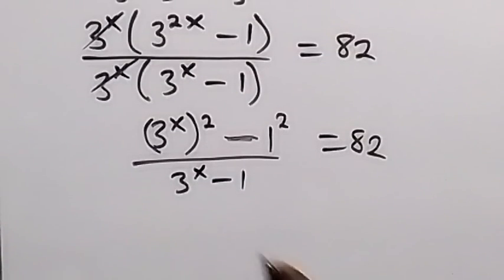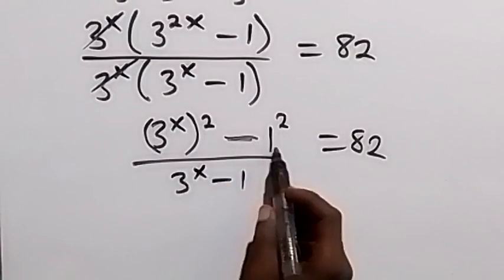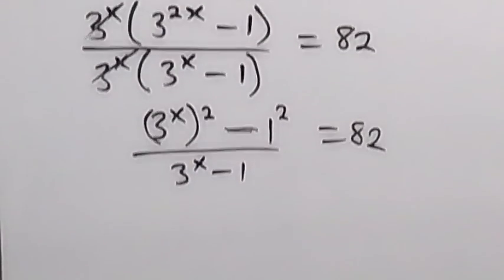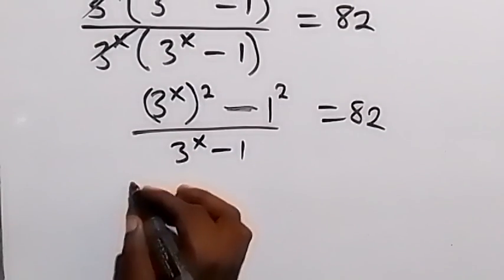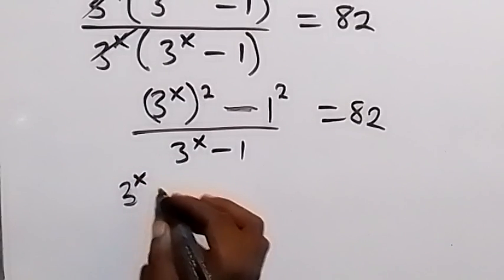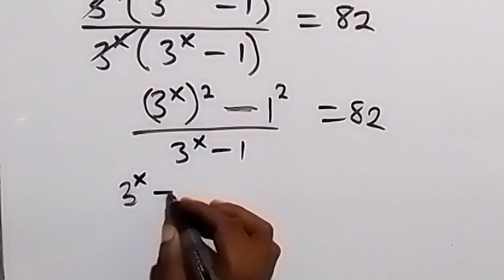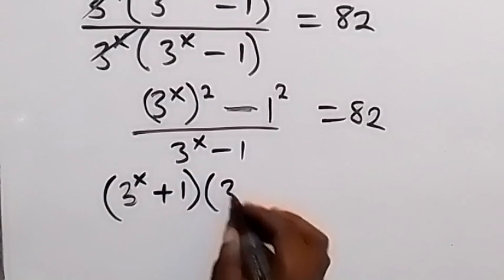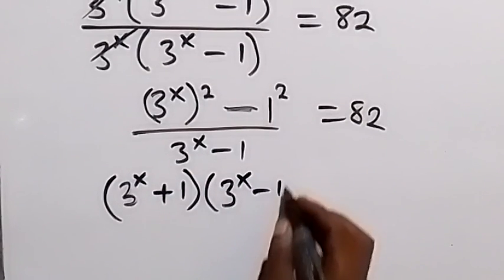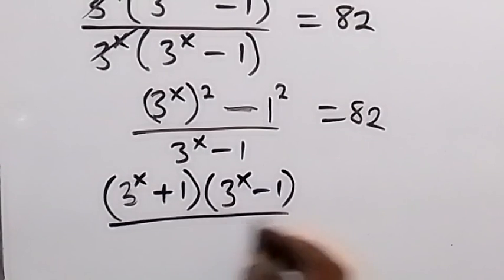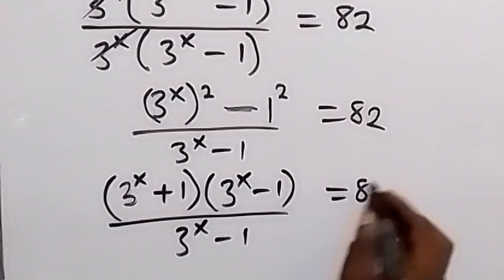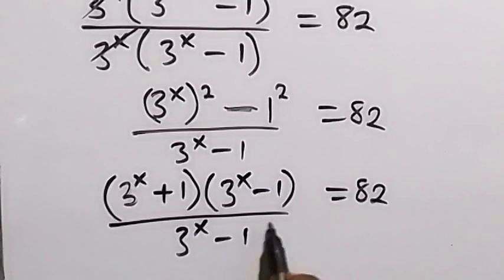And in the next step, we can write this another way — that is the difference of two squares. We have that become 3 raised to the power x plus 1, then multiply by 3 raised to the power x minus 1, which is divided by 3 raised to the power x minus 1, which is equal to 82. And here, 3 raised to the power x minus 1 cancels out, which is equal to 82.